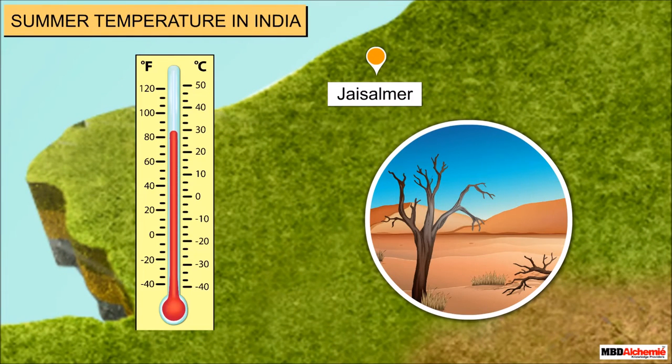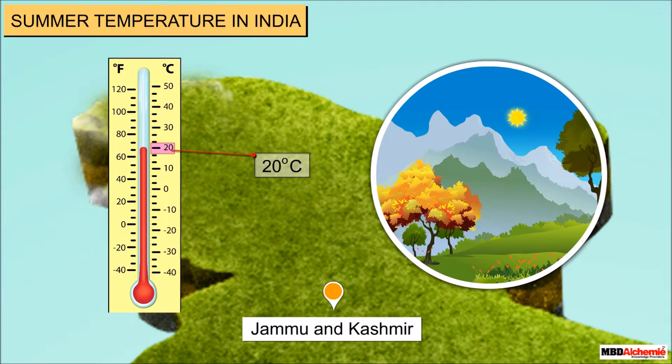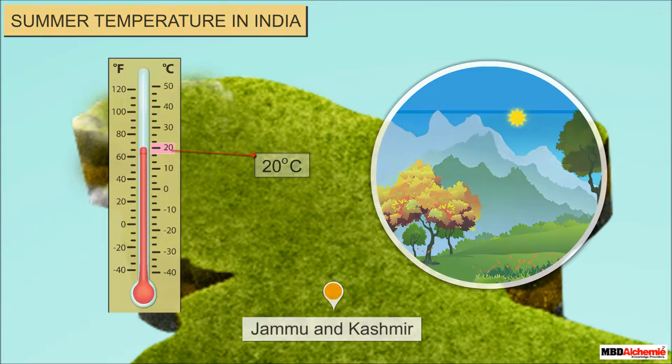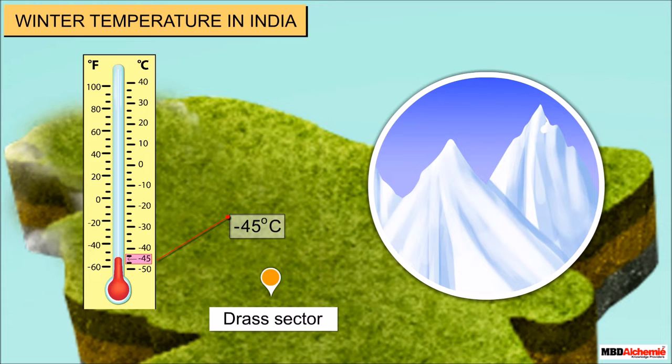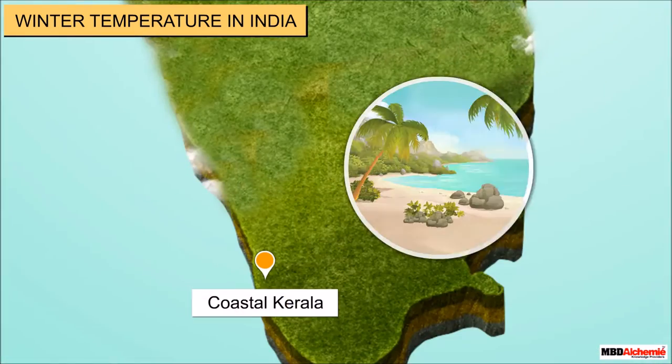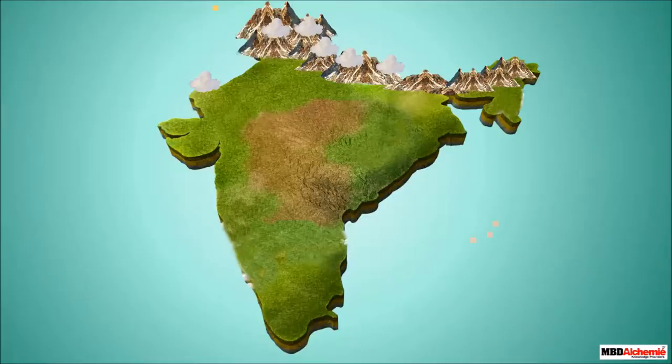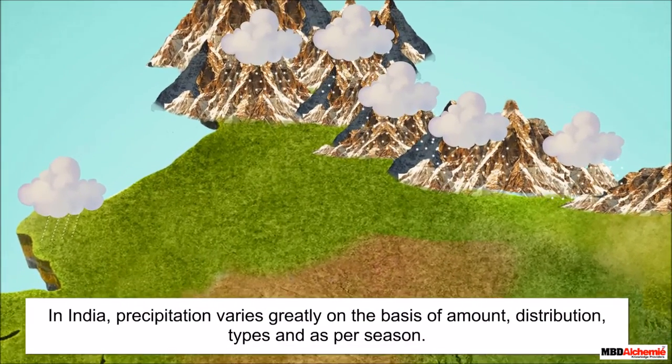When we say the climate of India we want to say the general conditions of the temperature and precipitation of different regions of India. For example, the temperature of Jaisalmer in Rajasthan, a desert region, goes up to 50 degrees Celsius in summers whereas at the same time the temperature in the mountainous region of Jammu and Kashmir is around 20 degrees Celsius. Similarly the minimum temperature in winter season becomes as low as minus 45 degrees Celsius in the Dras sector of Jammu and Kashmir whereas it remains around 20 degrees Celsius in the coastal Kerala.